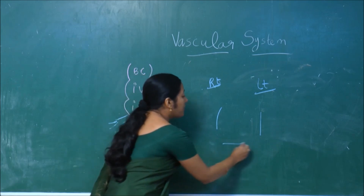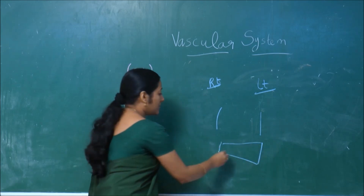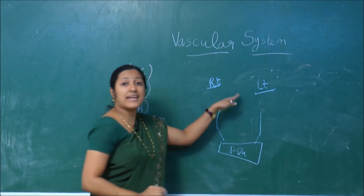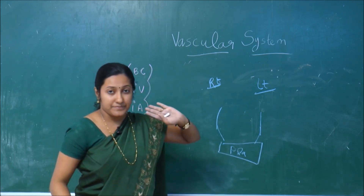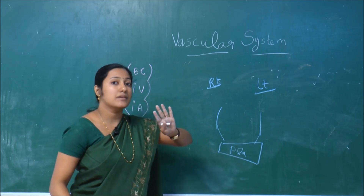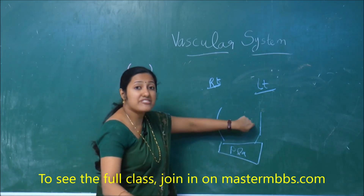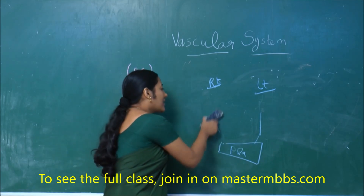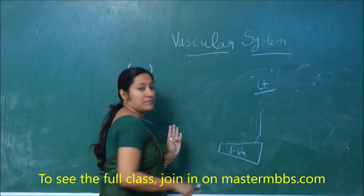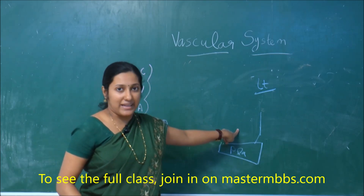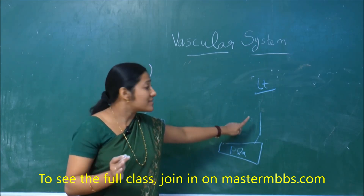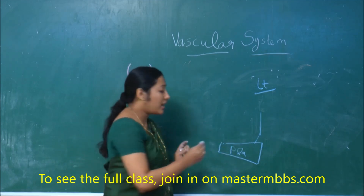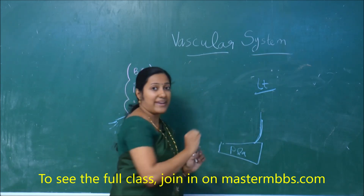So from the placenta, the right and left umbilical veins come. But after some time, only the left umbilical vein is left — the right one disappears. So left over is the left umbilical vein.